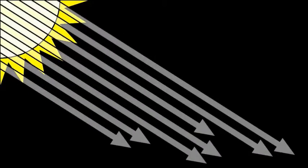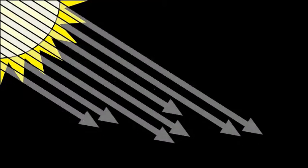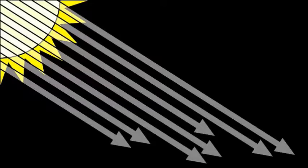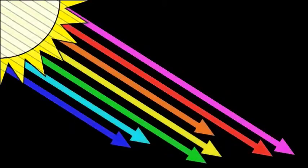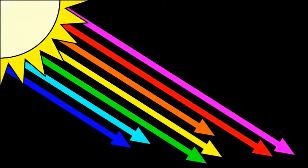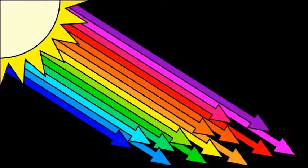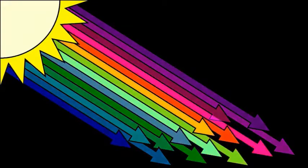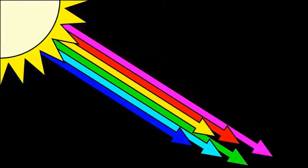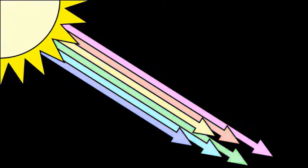Color comes from the light that we see. White light, like from the sun, is made up of many different colors. When all of these colors are mixed together, we see white light.